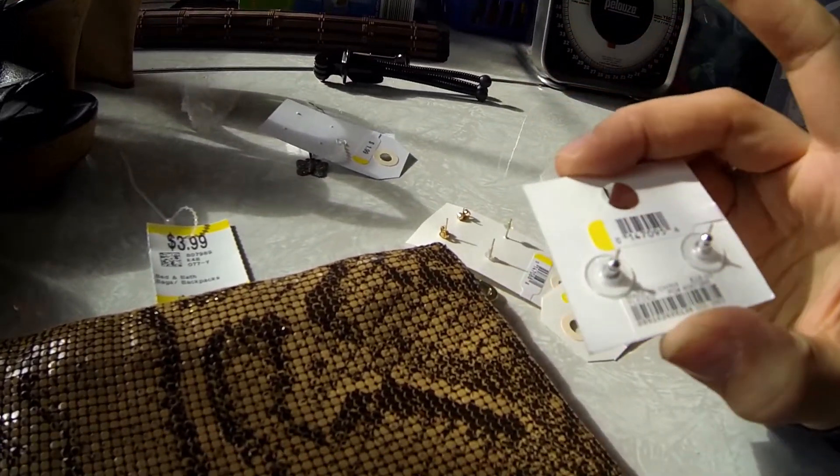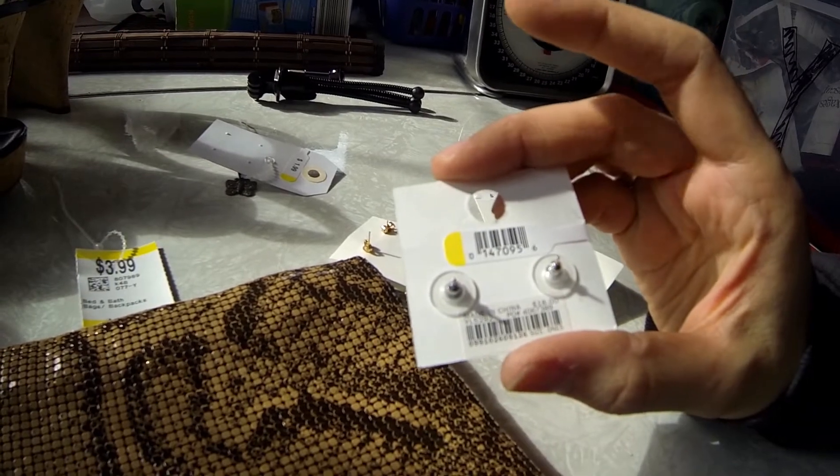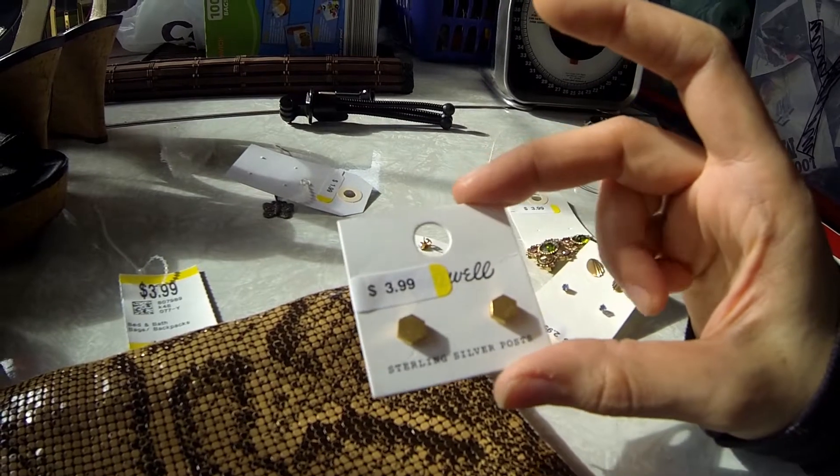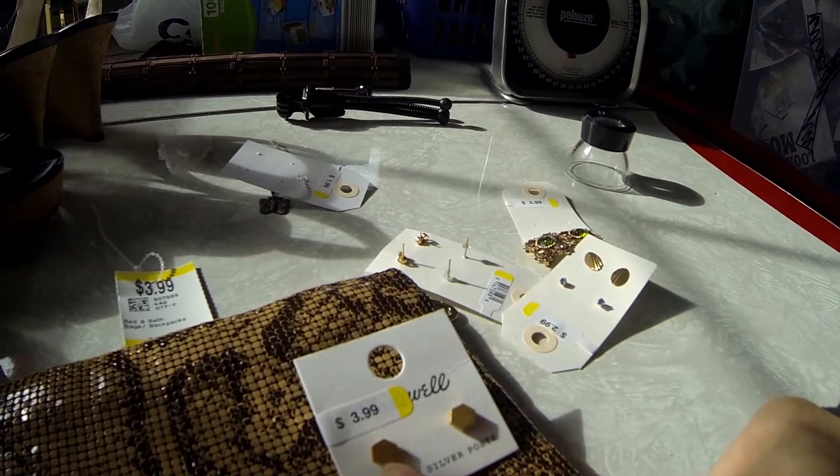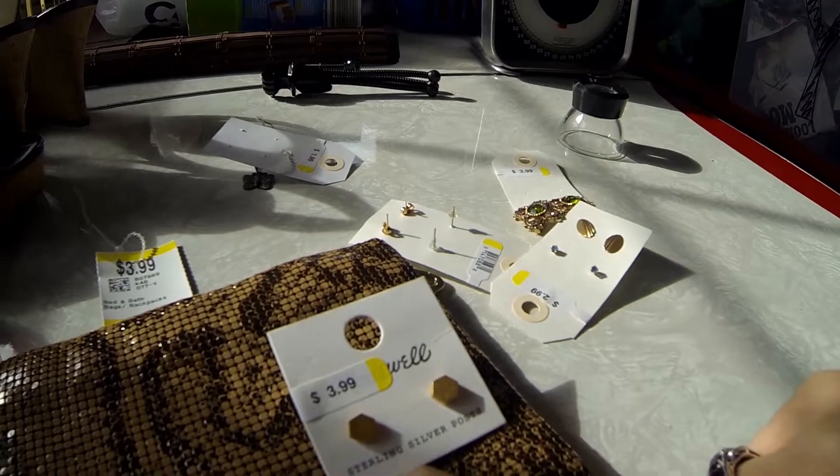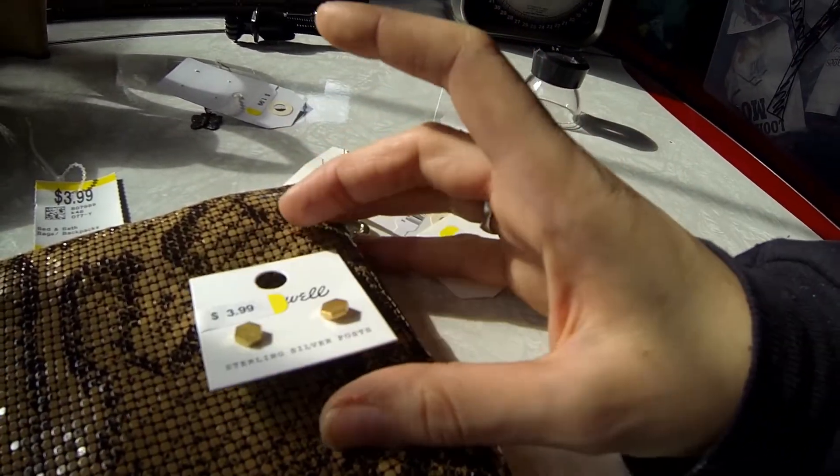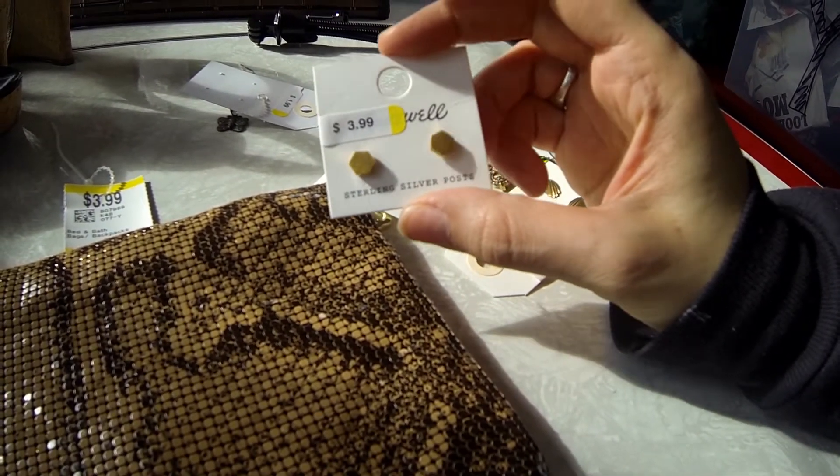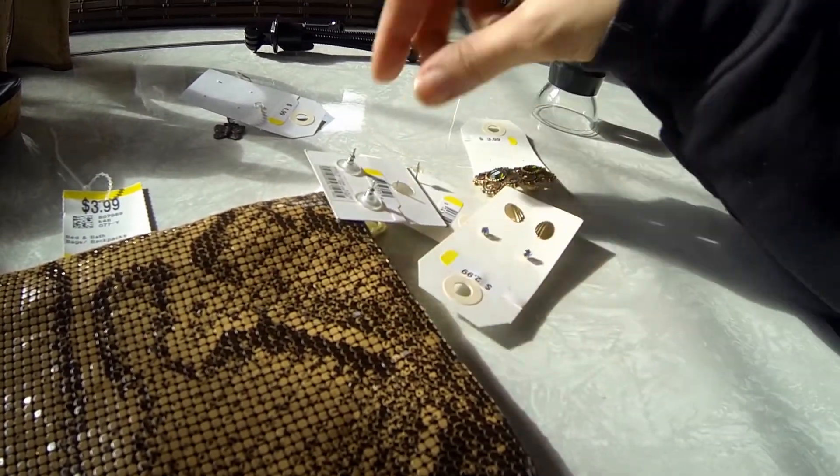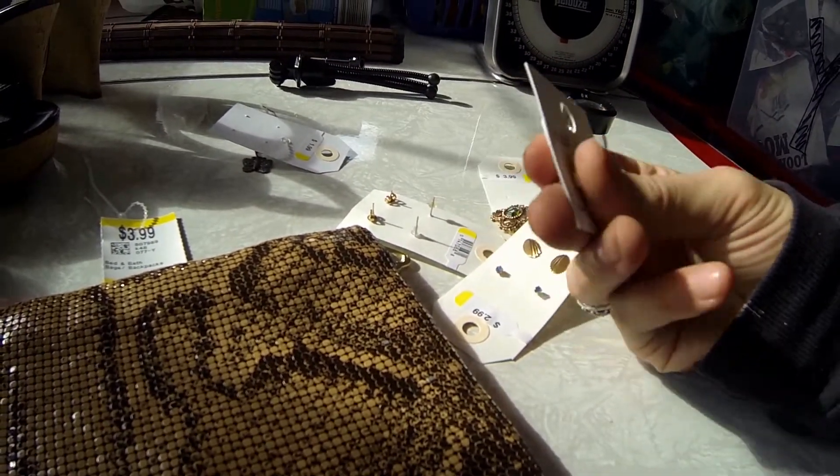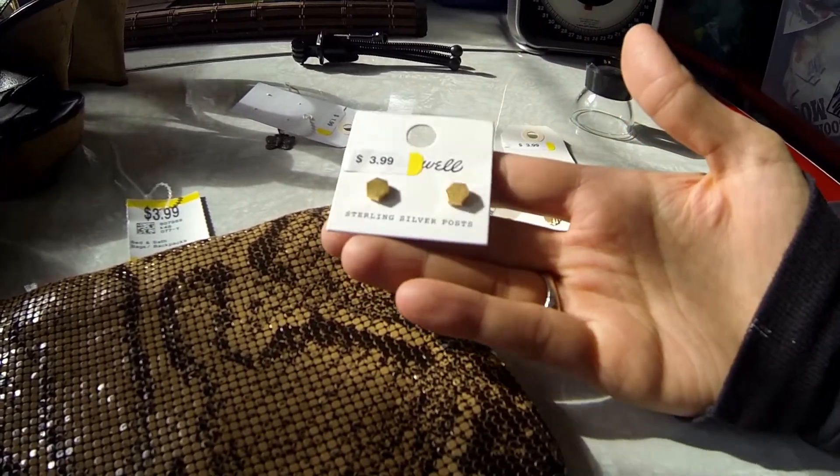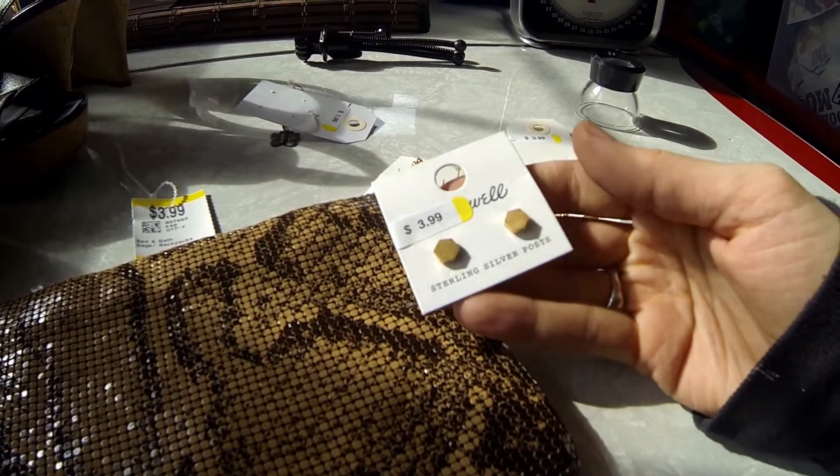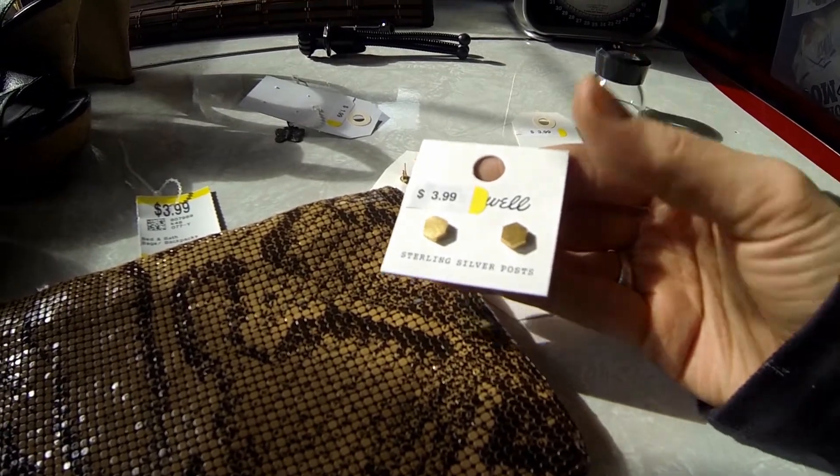This is new on the card. And it looks like they originally wanted $18 for it from Madewell. I think that's an Urban Outfitters brand. They had $3.99 on it at Savers. So I paid two for it. Sterling silver posts. They're just little post earrings. And I think I could put these on Poshmark because Madewell seems to be a popular brand. People seem to really like Urban Outfitters. It's kind of like a trendy hipster type of store.